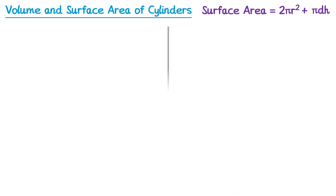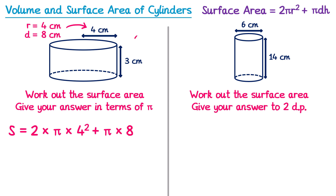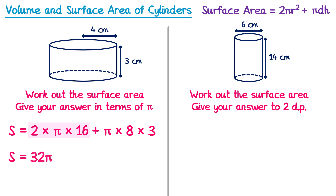Here are two more cylinders for you to try and find the surface area of. Feel free to pause the video and give them a try yourself. For the first one: surface area equals 2 times π times the radius squared — the radius is 4, so times 4 squared — plus π times the diameter (which is double the radius, so 8), times the height which is 3. This says to give the answer in terms of pi: 4 squared is 16, and 2 times 16 is 32, so that's 32π. Then 8 times 3 is 24, so that's 24π. Adding 32 and 24 gives 56, so the surface area is 56π centimeters squared.